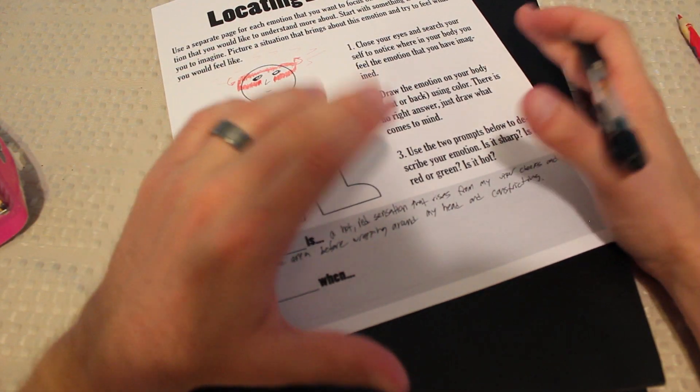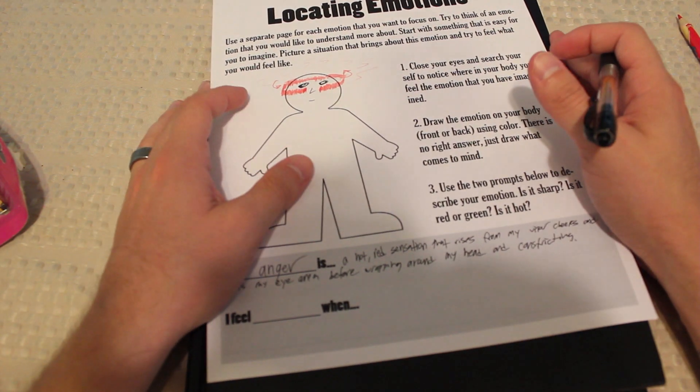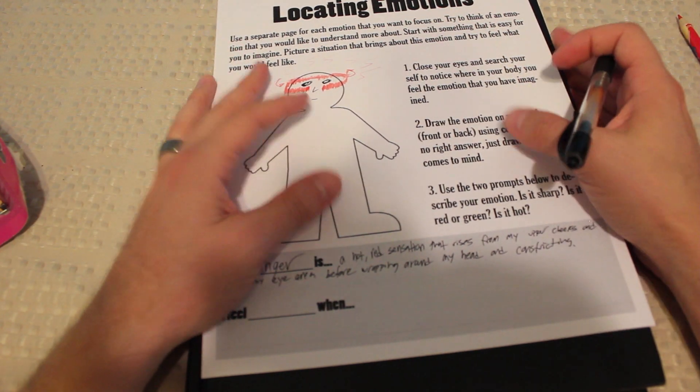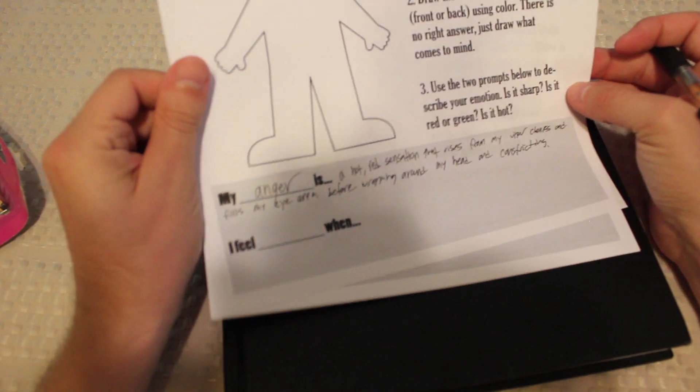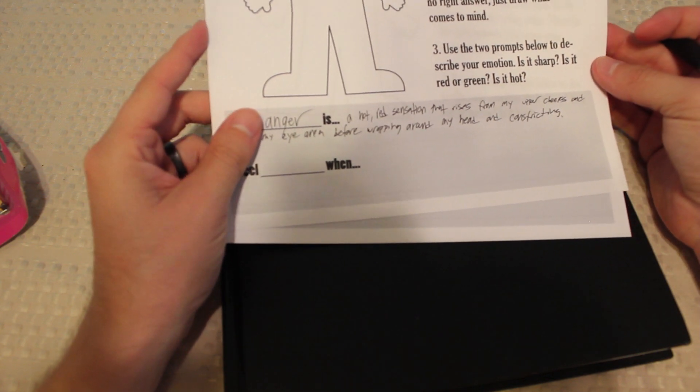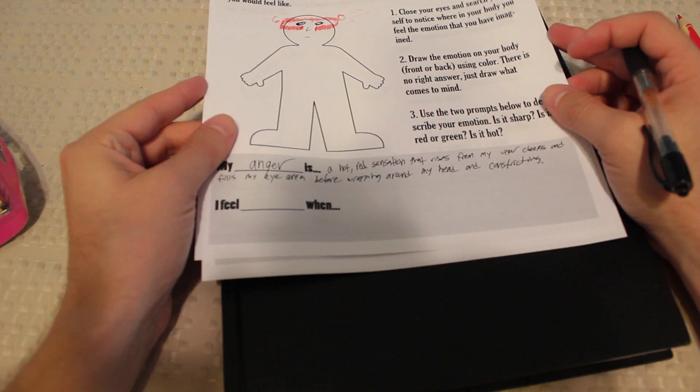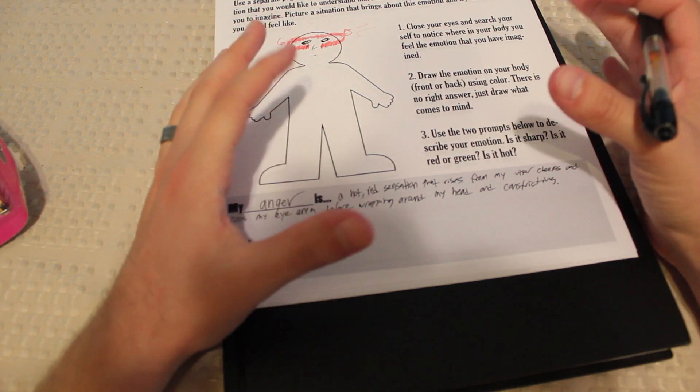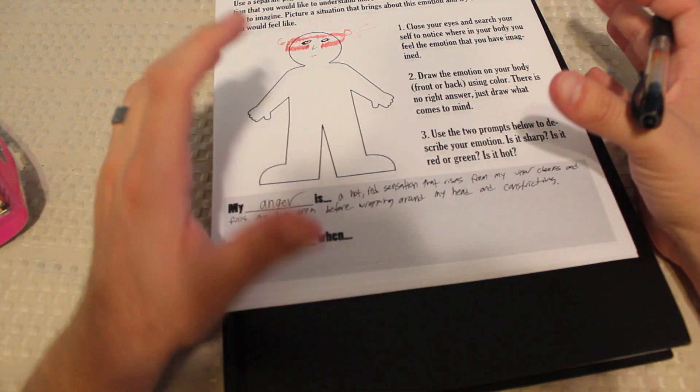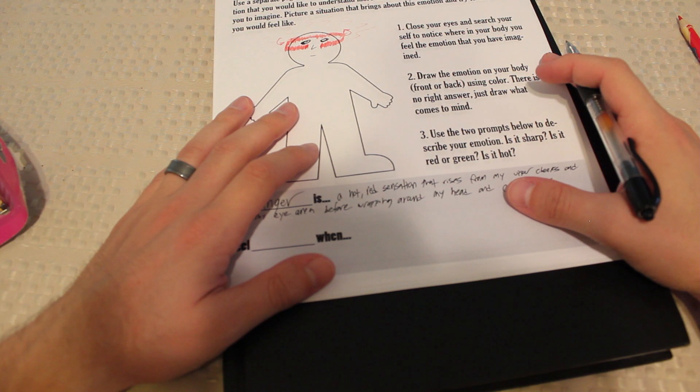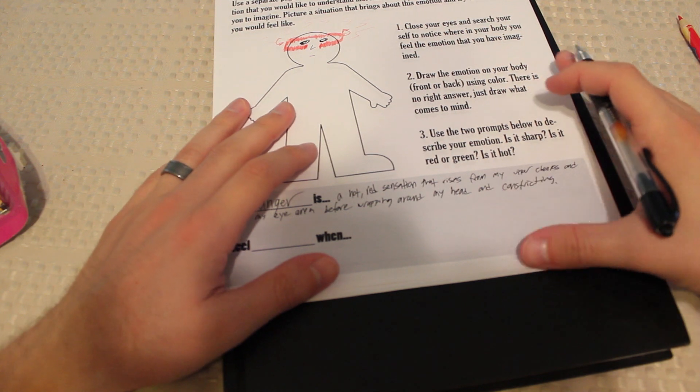So let's see, my anger is a hot red sensation, and this doesn't need to be exact. It doesn't need to sound good. This just needs to be descriptive for you right now. It could change over time, and that's totally okay, and it doesn't have to be well-written or grammatically correct. It doesn't matter if you're calling something a red sound or a blue taste. You're allowed to have synesthesia right now. This is just for you, so my anger is a hot red sensation that rises from my upper cheeks and fills my eye area before wrapping around my head and constricting. I realize this is not the most pleasant emotion to start with, but emotions are just that, they're emotions. Don't blame yourself for having more negative or more positive. At this point, try not to put a label on it, and just be descriptive.